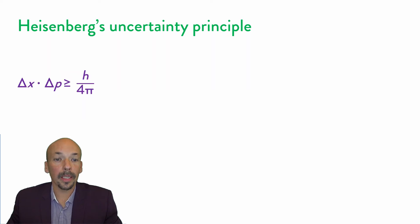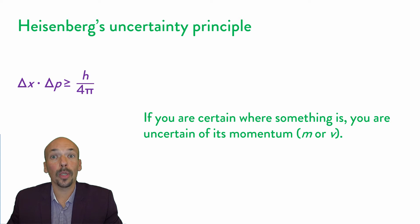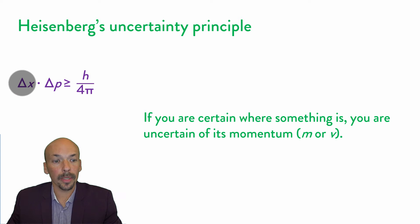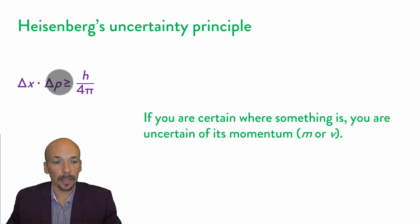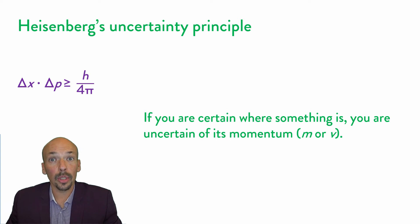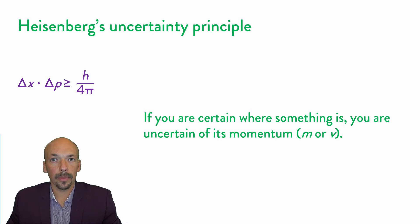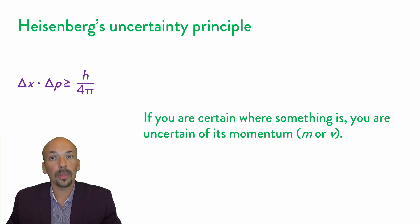What does this equation mean? It means two things. If you are very certain where something is, then delta x becomes very small. That means delta p needs to become larger, because if they both become smaller than this constant, the uncertainty principle is not met. So if you are sure where something is, you are uncertain of its momentum — either the mass or the velocity will change. Usually the mass doesn't change easily, so the velocity will change. The particle will start moving faster.